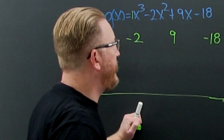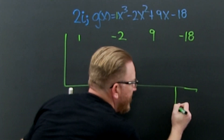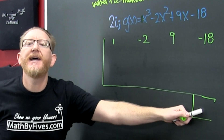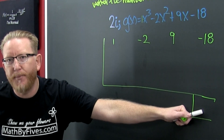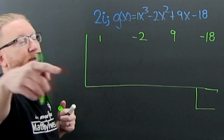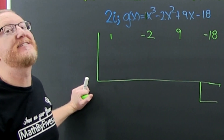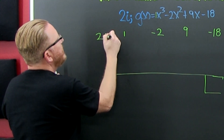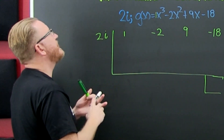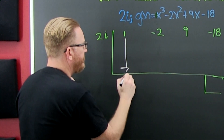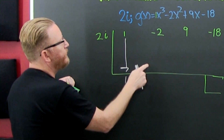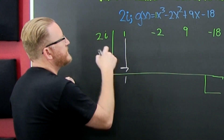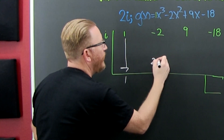Let's get up in here because if this is a zero of a polynomial, what happens? If this is a zero of the polynomial, then hopefully we get nothing. If not, it's not. So we put the potential zero on the outside — that's a 2i. Then I bring down that one. Then it's this one times that one, put it there.